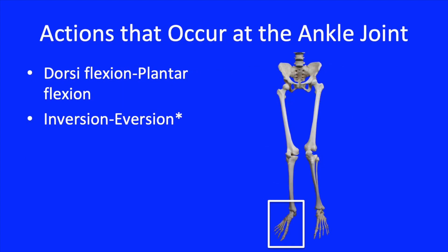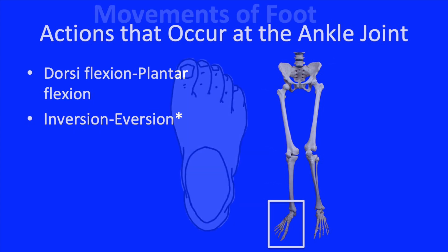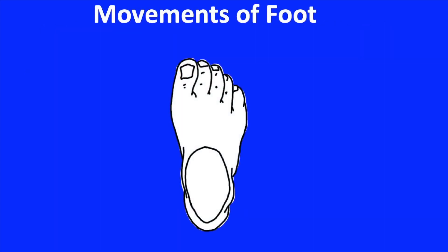As a reminder, the actions that take place at the ankle include dorsiflexion and plantar flexion, and inversion and eversion. Let's start our discussion of foot movement by looking at a drawing of the foot and recognizing the two axes that pass through the ankle bones that define the movements occurring at the ankle.